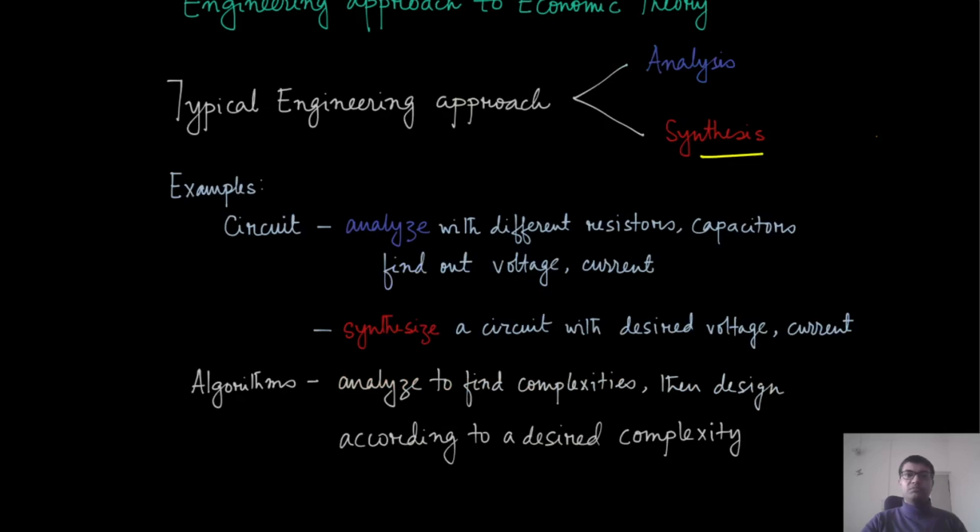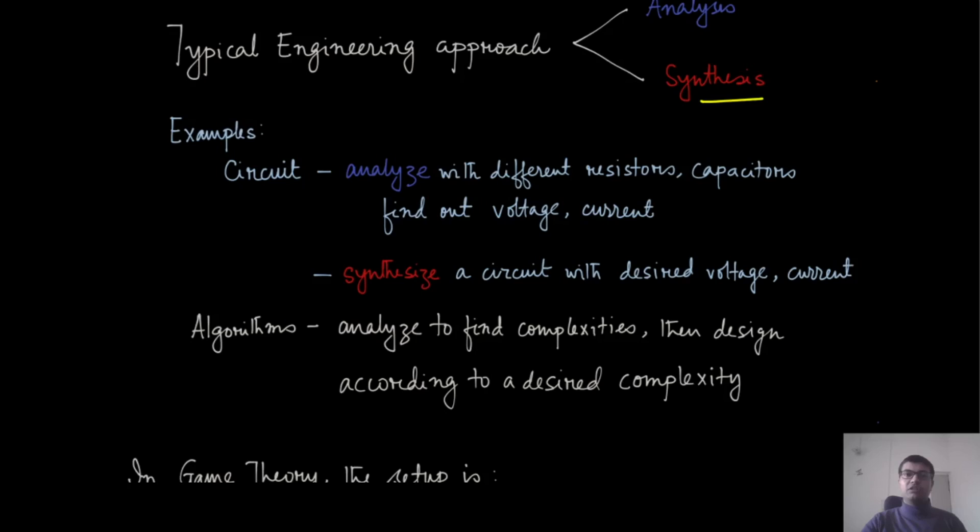To make this analog a little more clear, let's pick the classic example of circuit analysis and synthesis, which is a core engineering course for electrical engineering. In circuits, we have a bunch of resistors and capacitors, and in the analysis component we try to find out what is the voltage or current in any of these pieces.